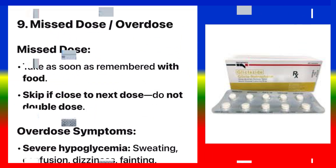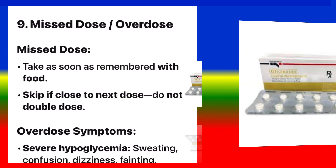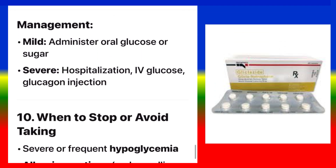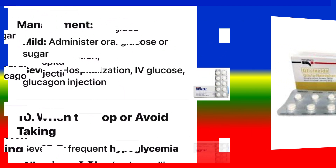If you miss a dose, take the next dose as scheduled — do not double dose. Overdose symptoms include severe hypoglycemia: sweating, confusion, dizziness, fainting, seizures, and coma, which can be life-threatening. For mild cases, administer oral glucose or sugar. For severe cases, hospitalization, IV glucose, or glucagon injection is required.